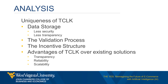So how does TCLK differ from existing solutions? Compared with other applications that perform a similar function, TCLK differs on three fronts: data storage, the validation process, and the incentive structure. Regarding data storage, alternative applications store their data in traditional databases instead of a blockchain. Traditional databases are inferior to blockchain in two areas. First, less security: because data are stored on specific servers, these applications have a single point of failure. In contrast, blockchain allows TCLK to store data across nodes within the network, making it significantly more difficult to alter or delete historical data.